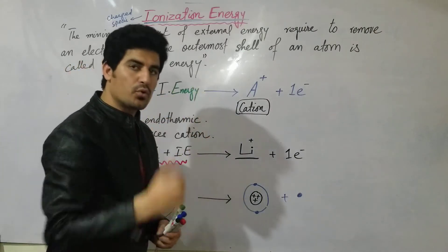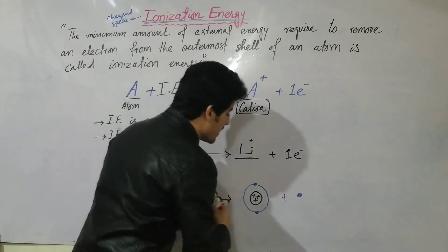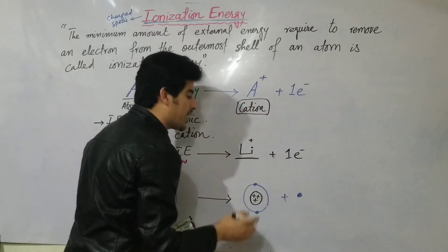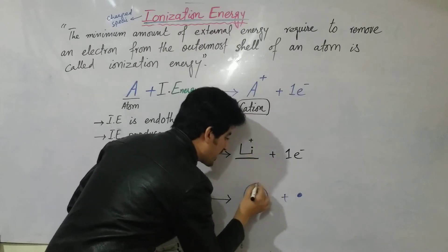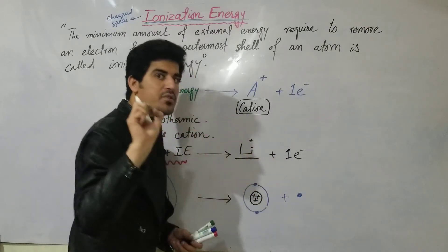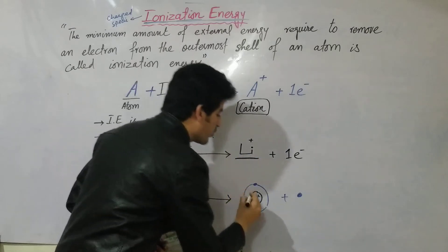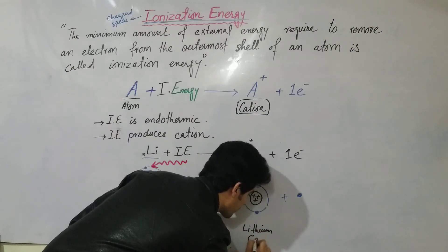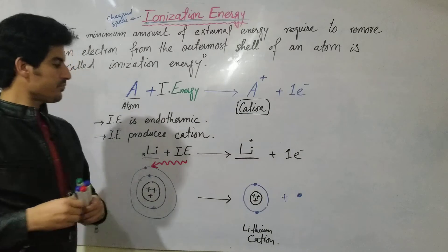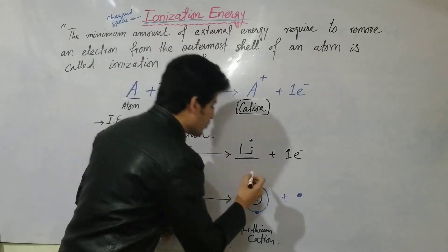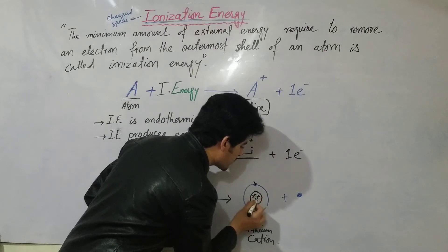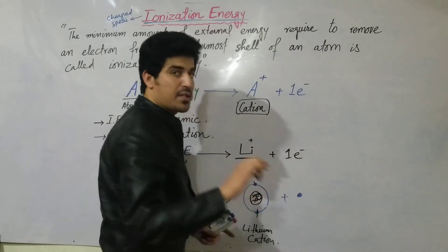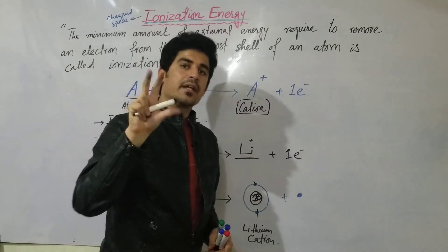The lithium atom had 3 electrons and 3 protons — plus 3 minus 3 equals zero, so it was neutral. After ionization, there are still 3 protons but now only 2 electrons. One extra proton remains, so a positive charge appears on the atom — and this is what we call the lithium cation (Li⁺).